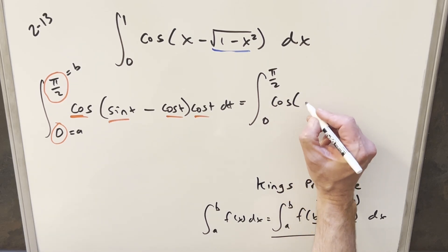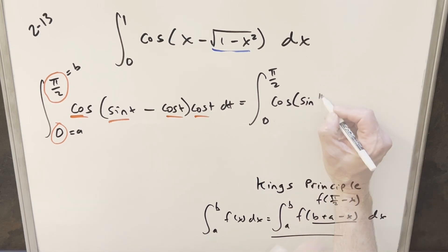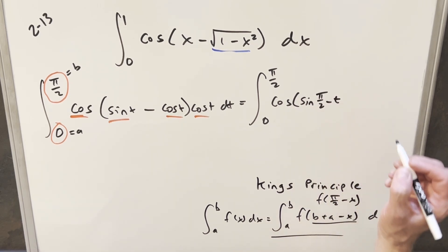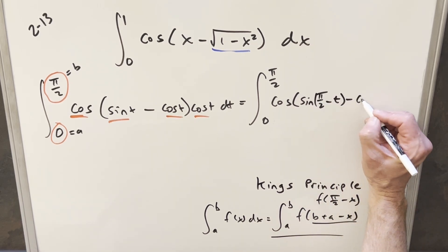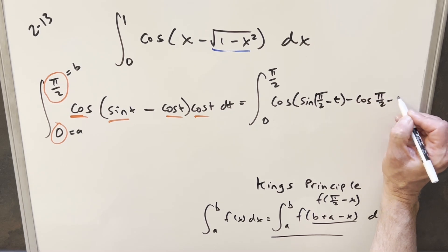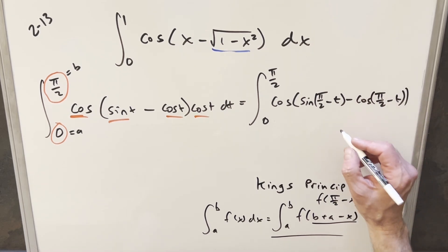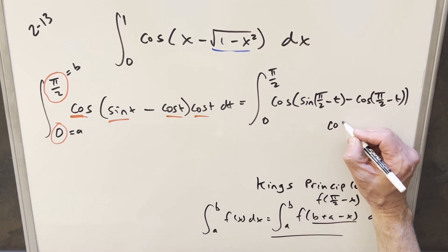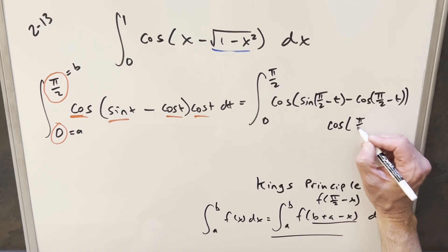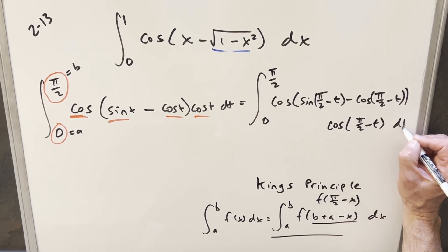then this is going to become cosine sine pi over 2 minus t, then we're going to have minus cosine pi over 2 minus t. I didn't really plan the space very well, but let's do the cosine down here, so it's going to become cosine pi over 2 minus t dt.